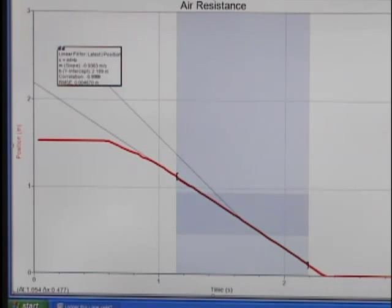If I select the constant speed portion of the graph and fit a straight line to it, I can see that I've got a slope of about 0.9 meters per second and that's the terminal velocity for one coffee filter.